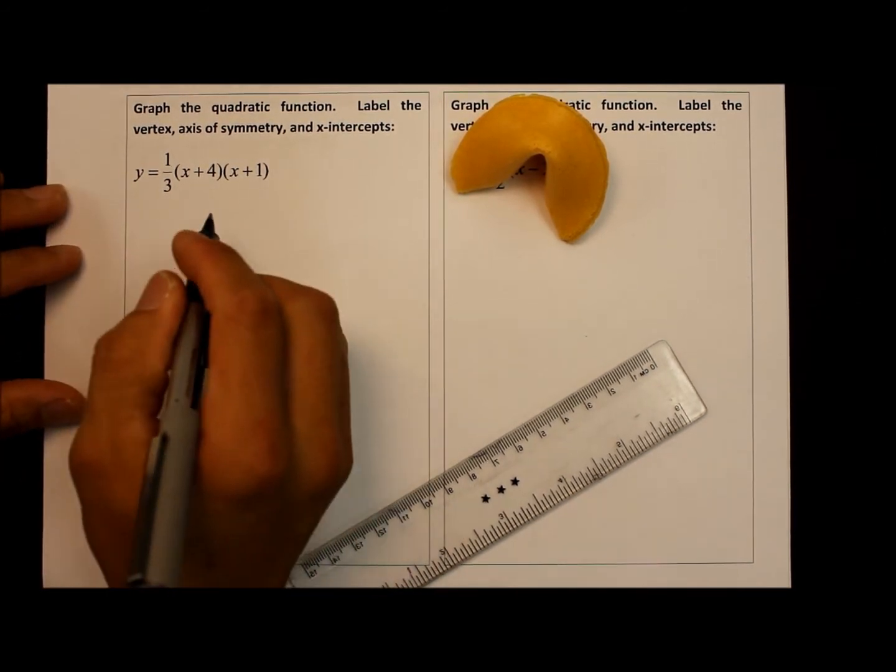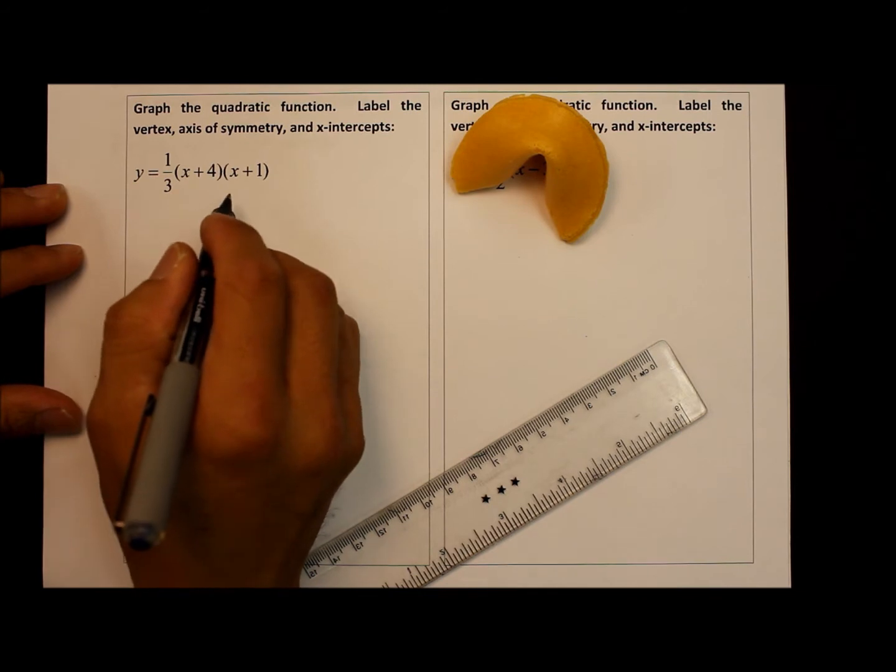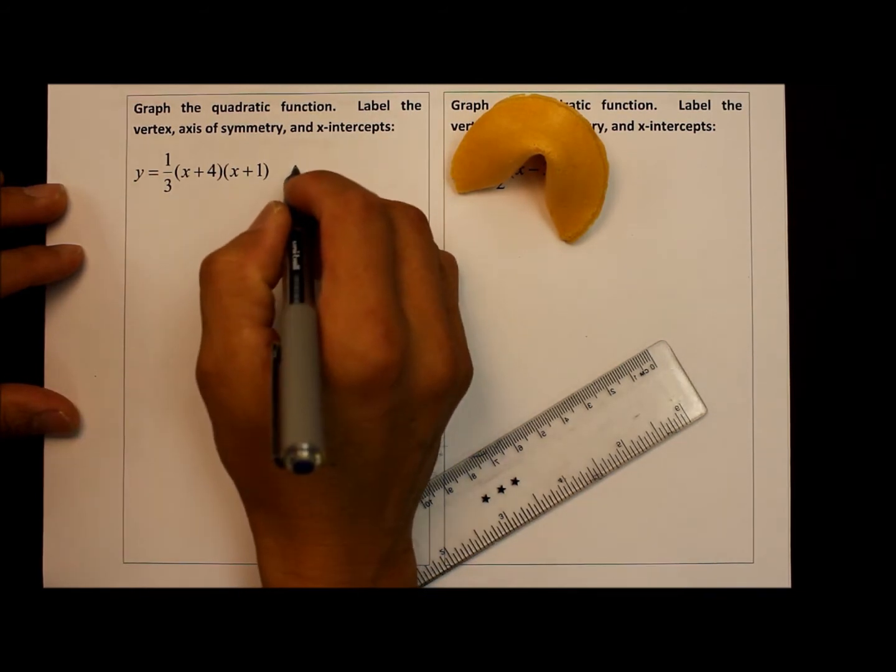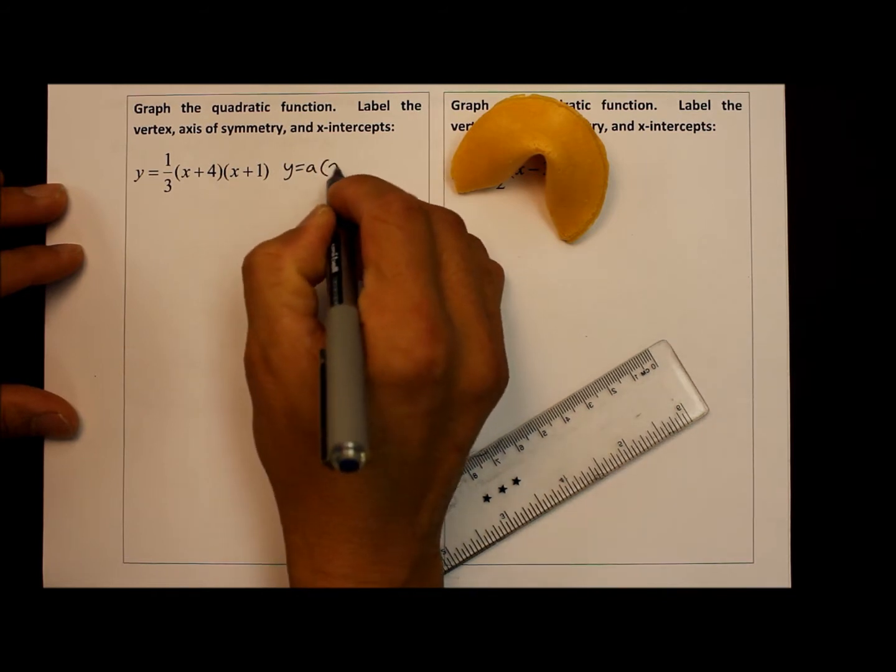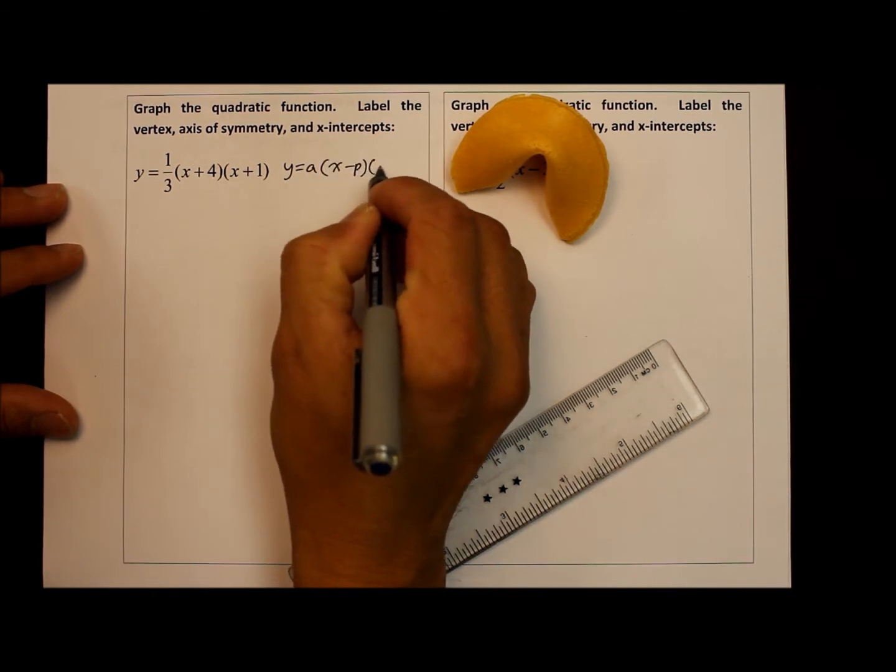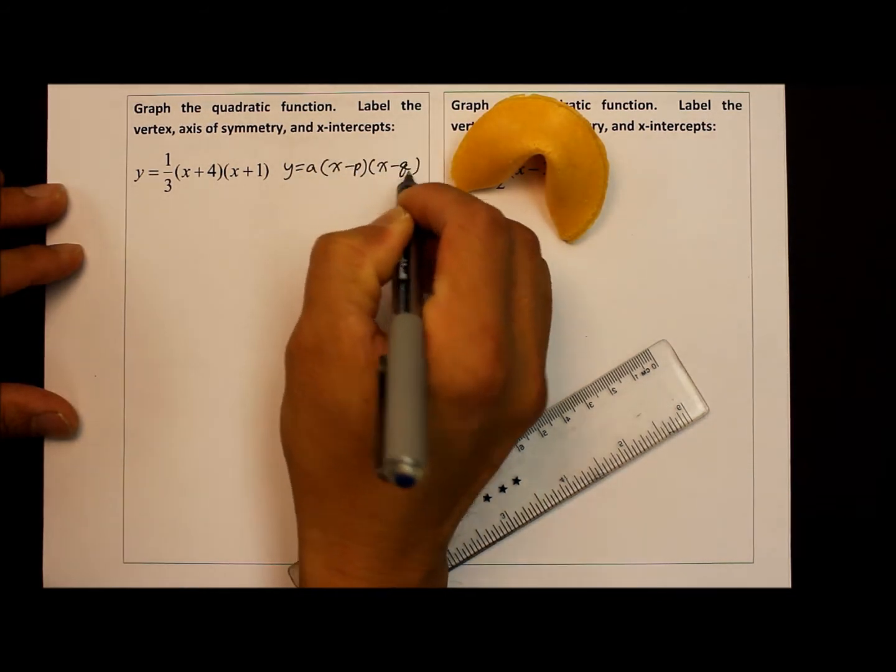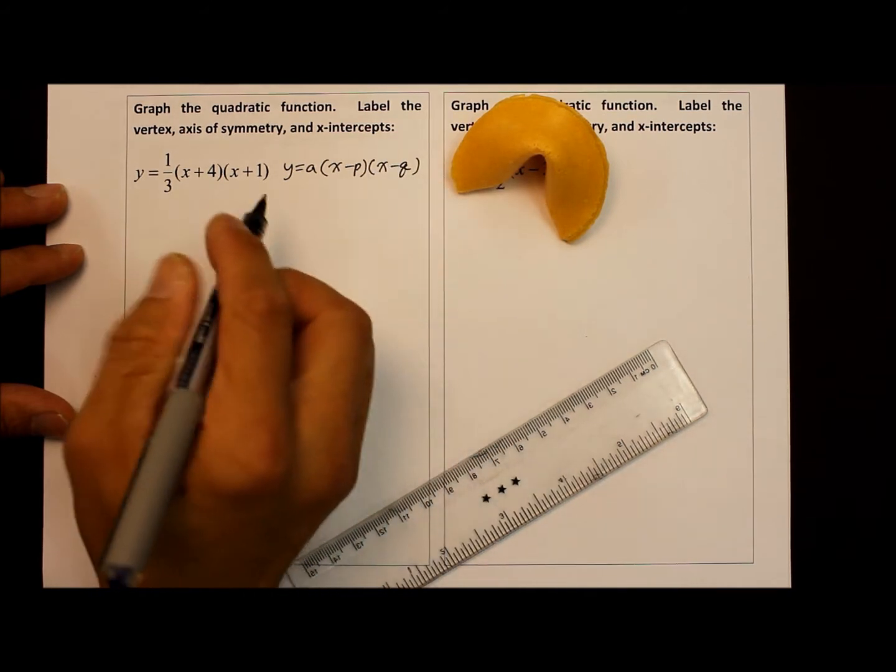Hey, this instructional video is about graphing quadratic functions in intercept form. The general intercept form is written as y equals a times the quantity of x minus p times the quantity of x minus q. So let's get started right away.